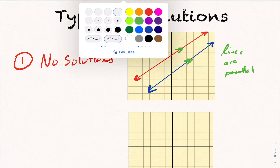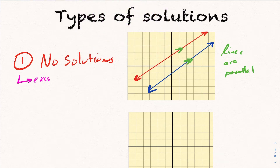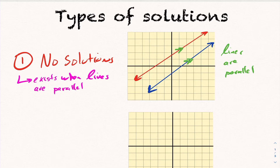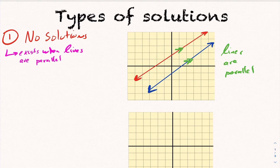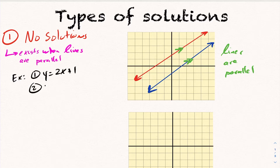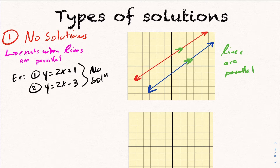So no solution is a possibility, and this exists when the lines are parallel. As a quick example, if I gave you the system y = 2x + 1 and y = 2x − 3, that would be an example of a system of linear relations that has no solution. The reason is that the lines are parallel — their slopes are the same.